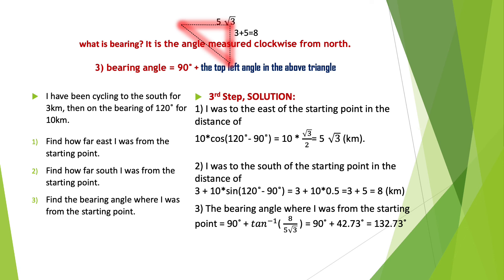Question 3: The bearing angle where I was from the starting point equals 90° + tan⁻¹(8 / (5√3)) = 90° + 42.73° = 132.73°. That is how the working for this bearing question is done. I hope you like it and good luck with your study.